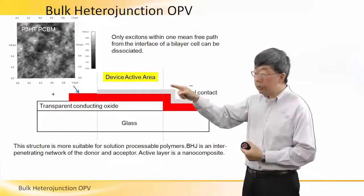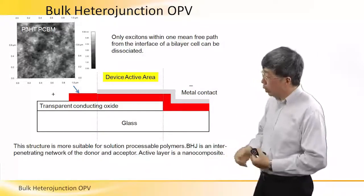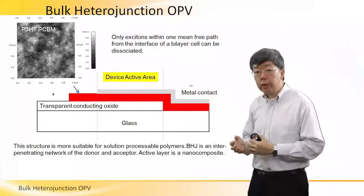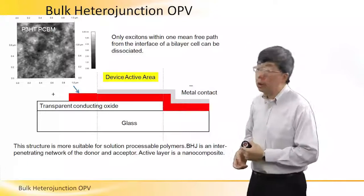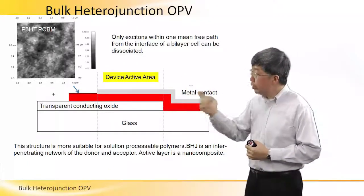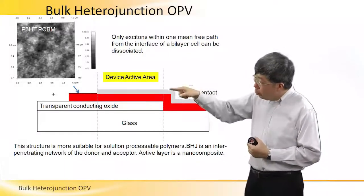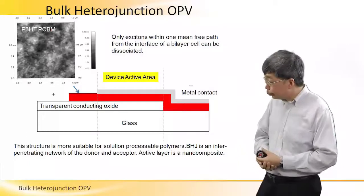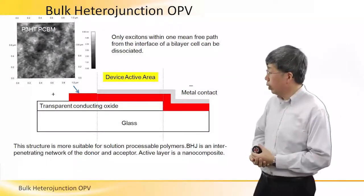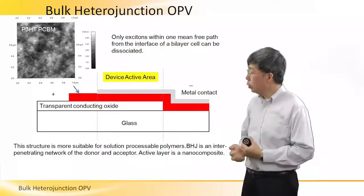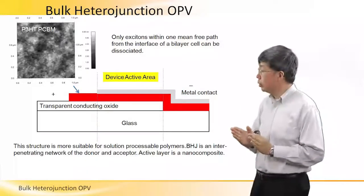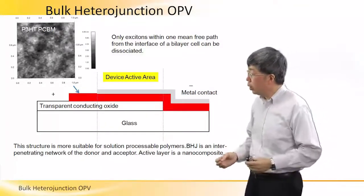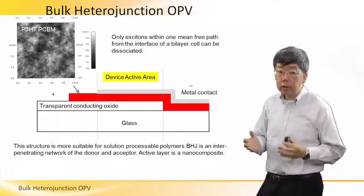The two components are P3HT and PCBM. The difference in contrast in this image is due to the interpenetrating network of the P3HT donor and the PCBM acceptor, and the PV effect is taking place at the interface between the two components. Only those excitons which are within a short distance from the interface can be converted into electrons and holes, and that is why we need to have this interpenetrating network.